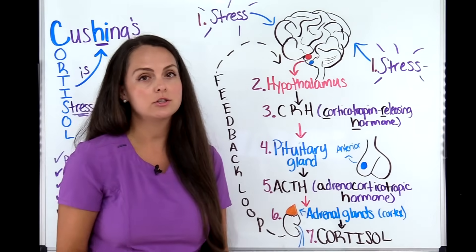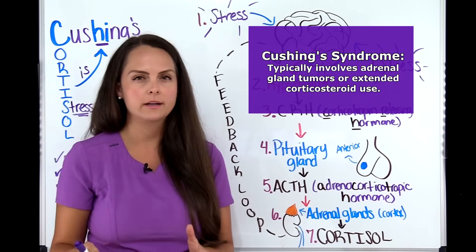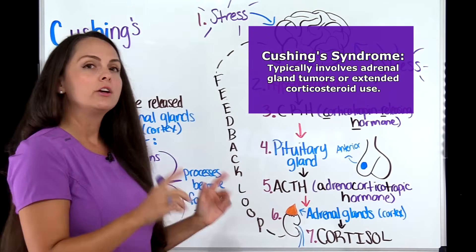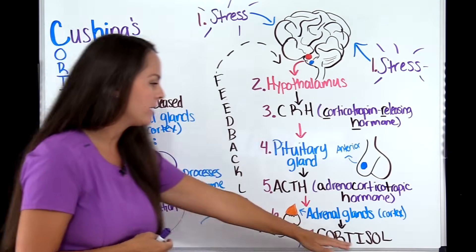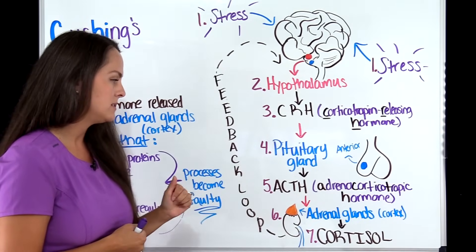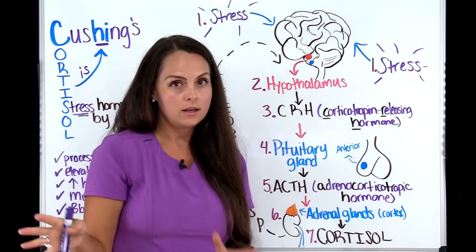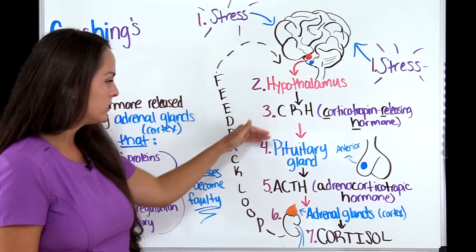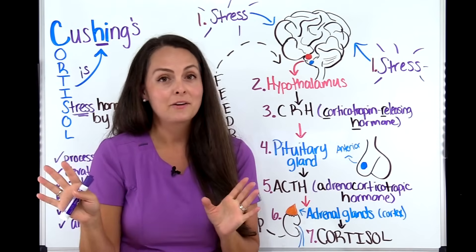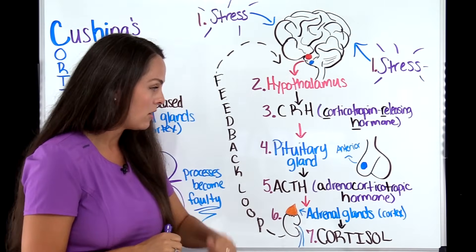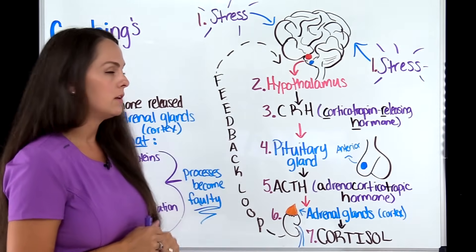On the flip side, the pituitary gland may be working properly but the adrenal glands have tumors causing too much cortisol secretion, or the patient is overusing corticosteroids long-term — that is Cushing's syndrome. In this case the lab work will show high cortisol but low ACTH, because the body senses too much cortisol and shuts down the pituitary gland's ACTH release. However, the adrenal glands keep releasing cortisol regardless, not responding to the feedback loop.